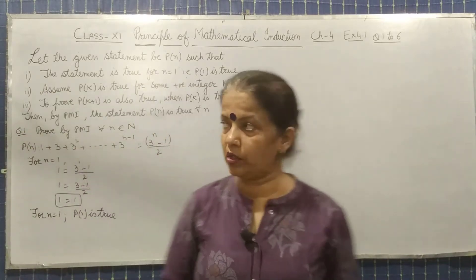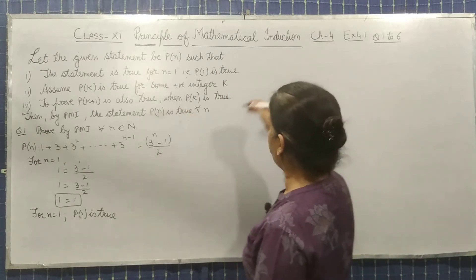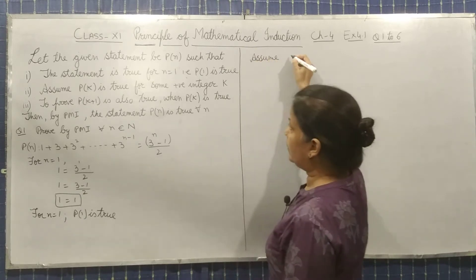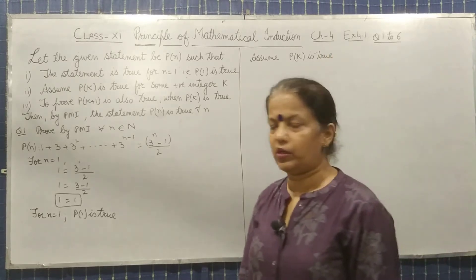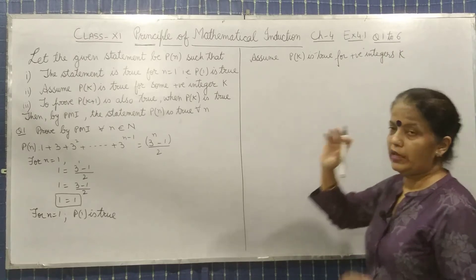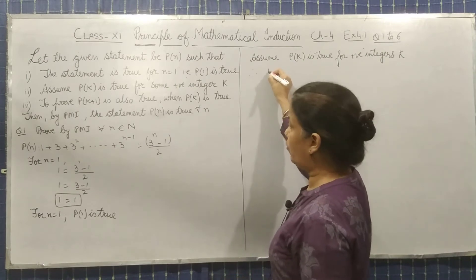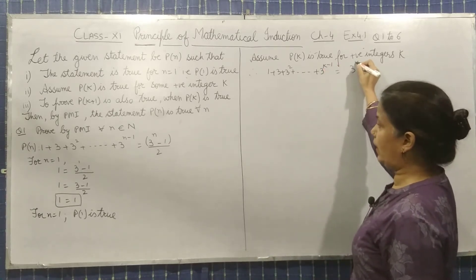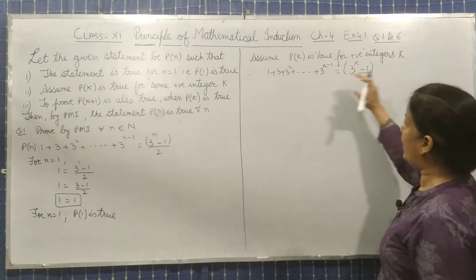The second point: assume that P(K) is true for some positive integer K. Instead of N, we put K. So we assume: 1 + 3 + 3² + … + 3^(K−1) = (3^K − 1)/2. We are assuming this is true — both sides are equal.